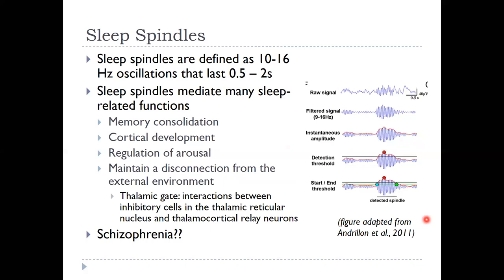Sleep spindles are more specifically characterized. They show a 10 to 16 hertz oscillation lasting about half a second to two seconds. We see them in reference to memory consolidation — when someone is learning something, and at night we see this probably in relation to processing those memories. We also see them in cortical development, which could be due to learning or the growth and maturation of the brain.